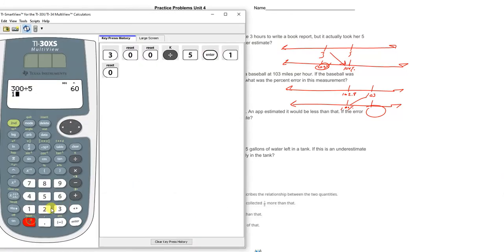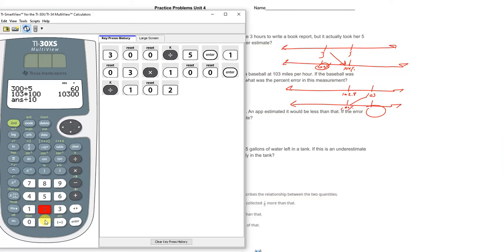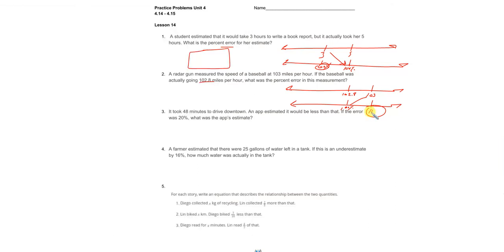103 times 100, and then we divide that multiplication by 102.8. And we get 100.1945525. Okay, so I'm gonna round that to about 100.2 percent, which means that the radar gun only has a difference of 100.2 and 100, which you can subtract for yourself - it's 0.2 percent.